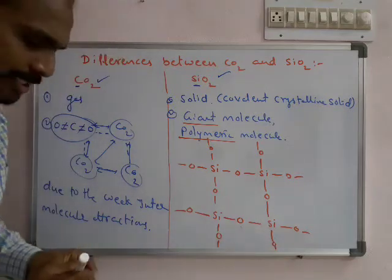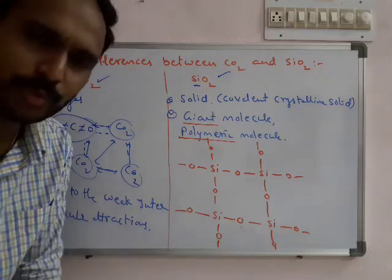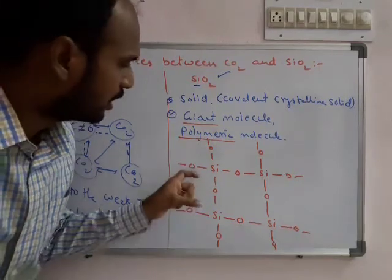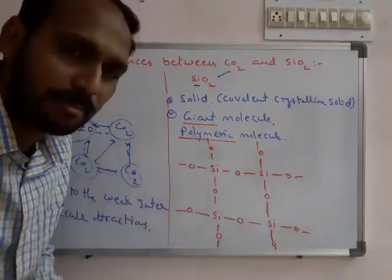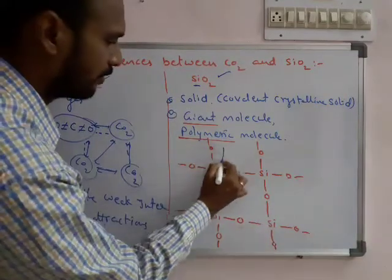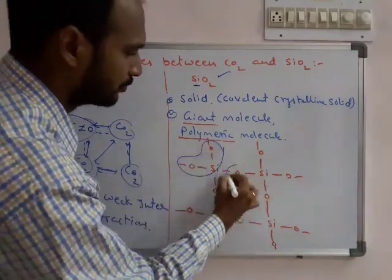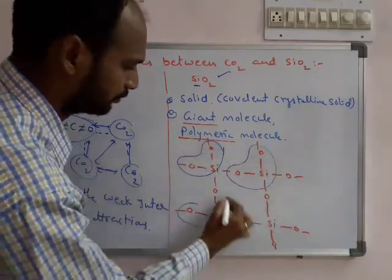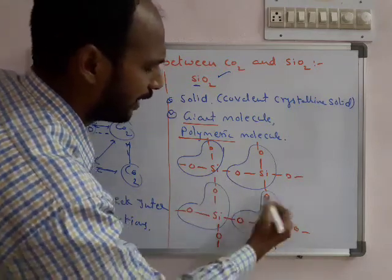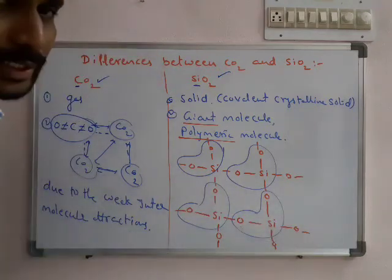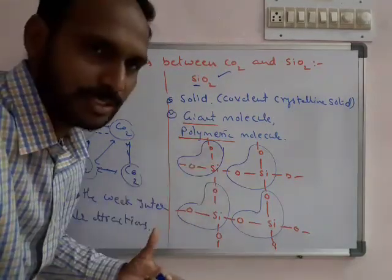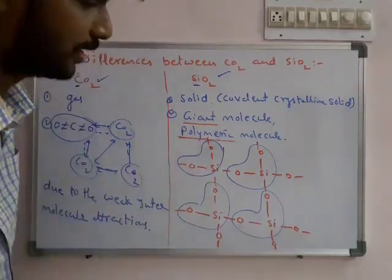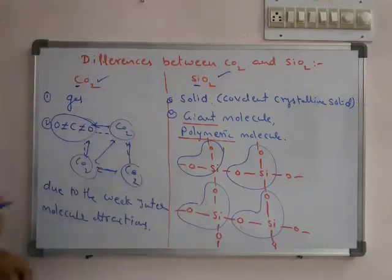This is one unit of the SiO2 structure. Like this, many SiO2s are combined together. See, this is one SiO2, this is one SiO2, forming a giant polymeric structure. That's why it is in solid form.